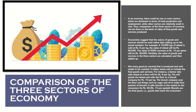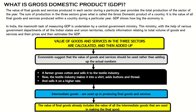Not every good or service that is produced and sold needs to be counted — it makes sense only to include the final goods and services. For instance, a farmer sells wheat to a flour mill for rupees eight per kg; the mill grinds the wheat and sells the flour to a biscuit company for rupees ten per kg; the biscuit company uses the flour, sugar, and oil to make four packets of biscuits, selling them to consumers for rupees sixty — that is rupees five per packet. Biscuits are the final good that reaches the consumers.